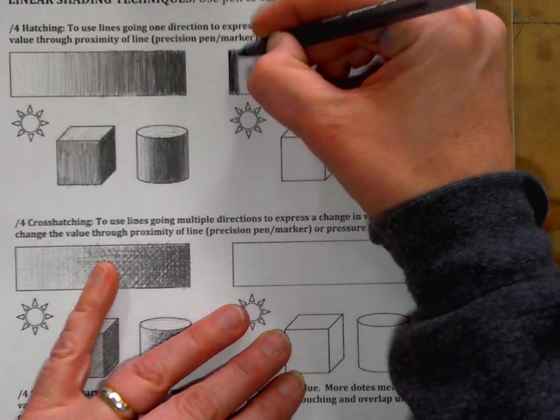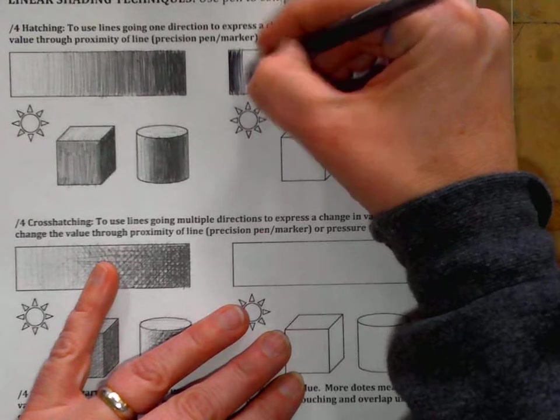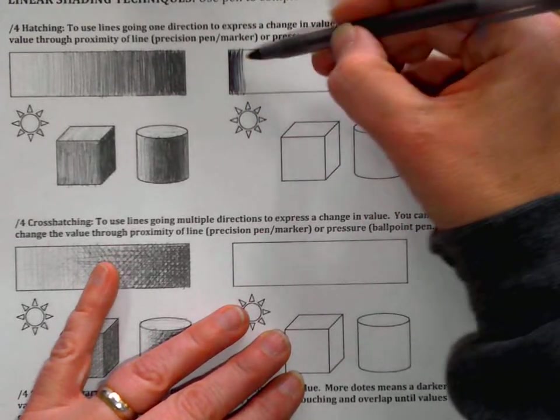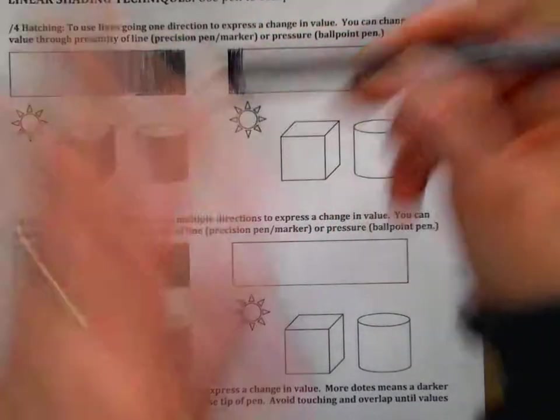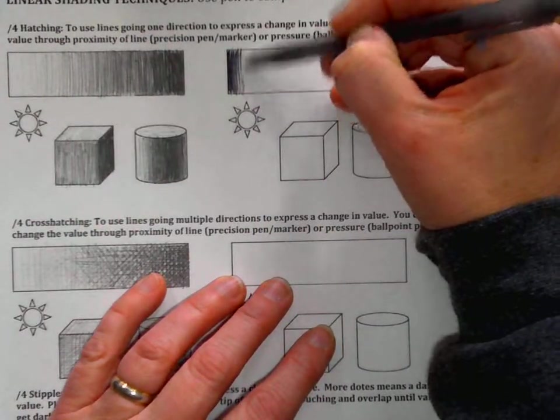With hatching, you're just going to go a single direction. I want you to transition from light to dark. I can change the angle. I hold the pen back a little bit farther, and I can actually get it to go even lighter.